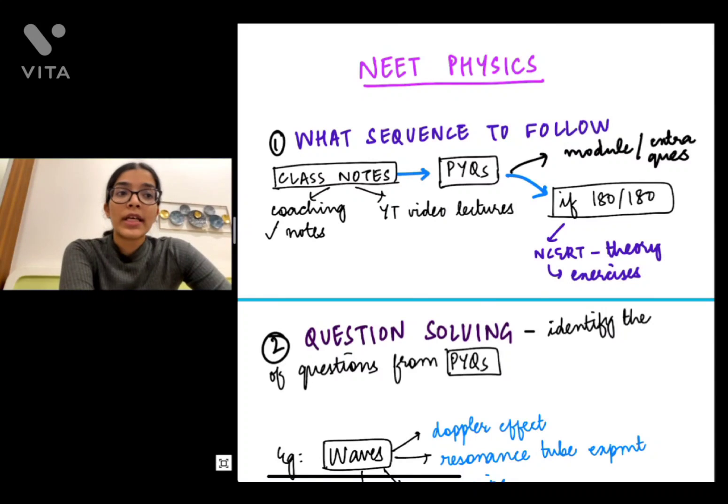Now after that if you're targeting a full score that is a score of 180 out of 180 only then should you do the NCERT theory and exercises. NCERT should be done once you've begun to score 130, 140 plus or 150 plus and you shouldn't ever start the chapter with the NCERT of physics because it's a slightly complicated book.